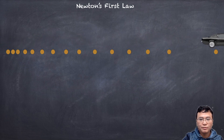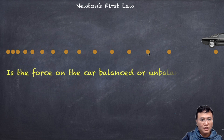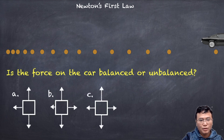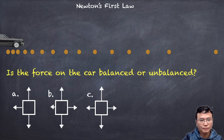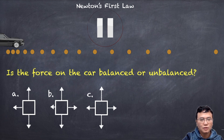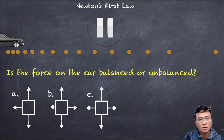We have a car moving from left to right. Every second it drips some oil on the ground. Looking at that, is the force on the car balanced or unbalanced? If you look at this, you can see that the distance between drops is increasing, so we can imply that the car is accelerating. Because the car is accelerating, the force on the car is unbalanced.